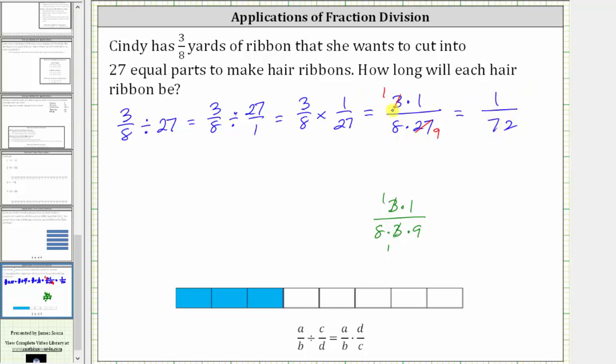And sometimes we'll also see the simplification shown here, when we have the product of the two fractions. And now we know each hair ribbon will be 1/72 yards. Which means if this model represents 3/8 yards, if we cut this length into 27 equal parts or pieces, each piece would be 1/72 yards.